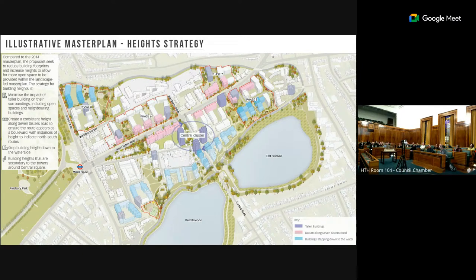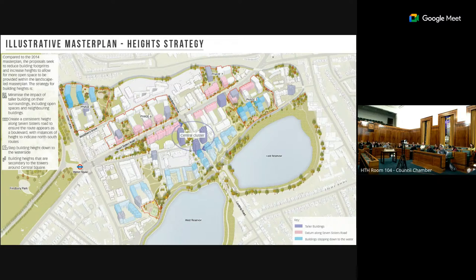Councillor Webb notes a gap between fundamental concerns from officers about the nature of the tower blocks and overbearing impacts. How much wriggle room is there between the heights of the towers proposed and what will eventually come? How can the overbearing concerns that officers have be avoided? They also ask: will we see for all units whether they get sunshine — not just open areas but actual units? How many units will not have sunshine? Is dual aspect being considered for all units?